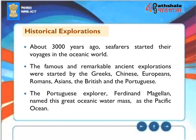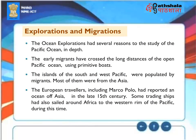Historical Explorations: About 3,000 years ago, seafarers started their voyages in the oceanic world. The famous ancient explorations were started by the Greeks, Chinese, Europeans, Romans, Asians, the British, and the Portuguese. The Portuguese explorer Ferdinand Magellan named this great oceanic water mass as the Pacific Ocean. Early migrants crossed long distances of the open Pacific using primitive boats, and the islands of the South and West Pacific were populated by migrants, most of them from Asia. European travelers, including Marco Polo, reported an ocean off Asia in the late 15th century, and some trading ships sailed around Africa to the western rim of the Pacific during this time.